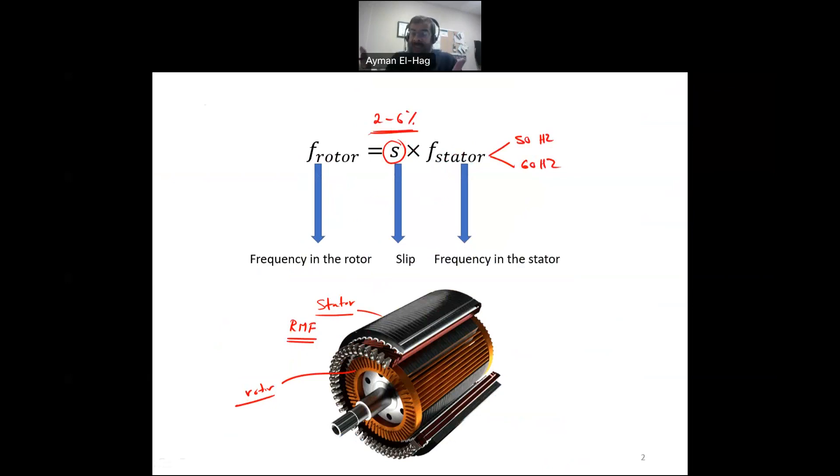So you can see here that the frequency, the electrical frequency of the induced voltage in the rotor is just a fraction of the frequency on the stator. The question is, why is that? Why there is such difference in the frequency between the rotor and the stator? To answer this question, I will try to use some non-technical terms, try to simplify the idea so that you can grasp it.